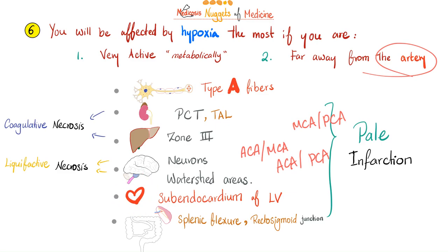In the heart, blood comes from outside via coronary arteries, so the subendocardium — farthest from the artery on the inside of the left ventricle — is most vulnerable to hypoxia. In the colon, the splenic flexure and rectosigmoid junction are vulnerable because they sit at the boundary between the superior mesenteric artery supplying midgut and the inferior mesenteric artery supplying hindgut.